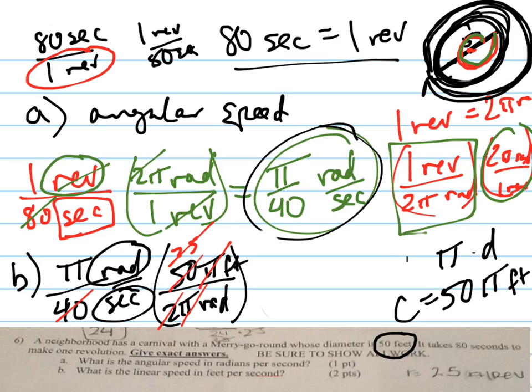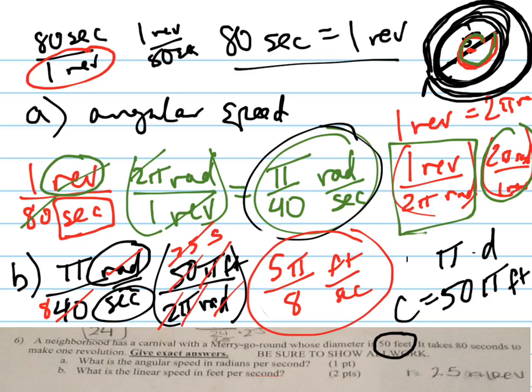So, you got 5π over 8, and the radians cancel, feet per second. And, if they want, if you want to write as a decimal, you can do that as well, but that's the exact answer.